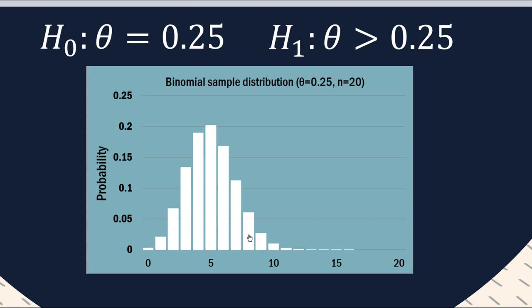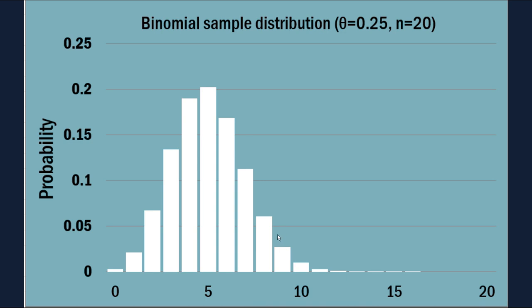So each of these bars that you're seeing in this distribution is simply a single instance of the binomial formula with n being 20 and theta being 0.25. So if we were trying to find the rejection region, it's as simple as trying to find the point at which there's 5% in the tail.